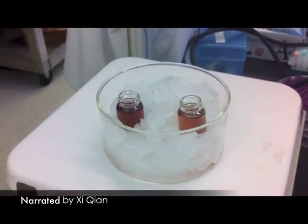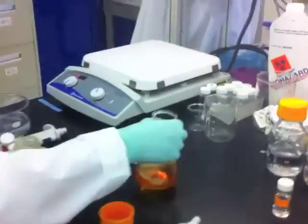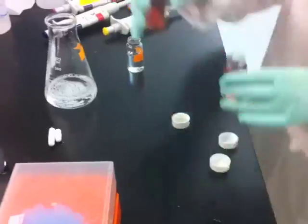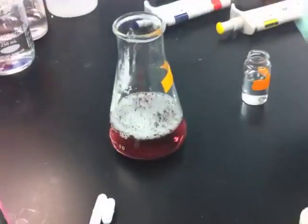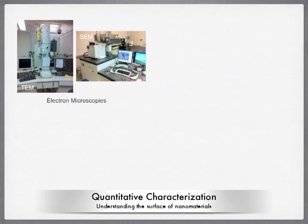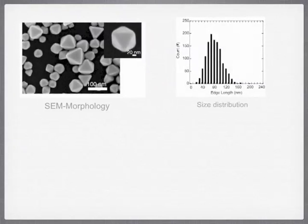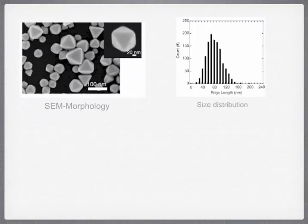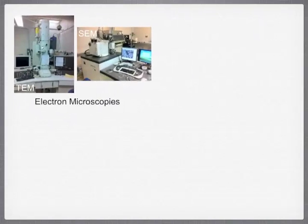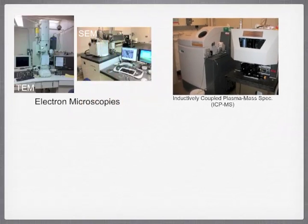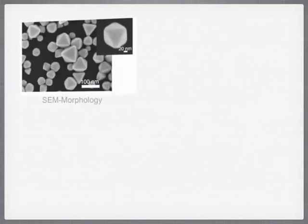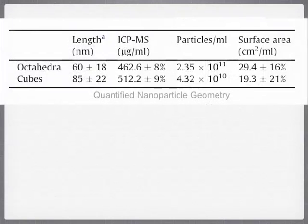Nanoparticles are synthesized through careful controls of their morphologies. Yet, to ensure the quality of nanobio interfaces, they are therefore also characterized via a variety of methods. For example, we used electron microscopies to characterize the sizes and morphologies of nanoparticles. We also combined microscopic characterizations with inductively coupled plasma mass spectroscopy, which could measure the concentration of nanoparticles, so that we could quantitatively determine the surface area per milliliter of nanoparticles.